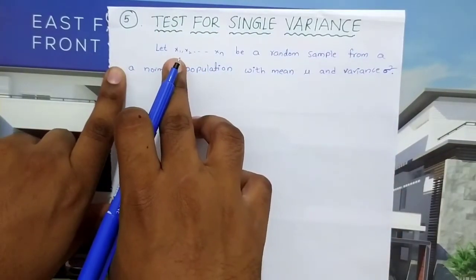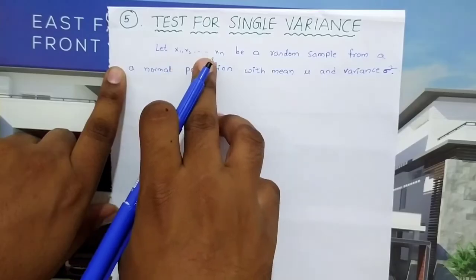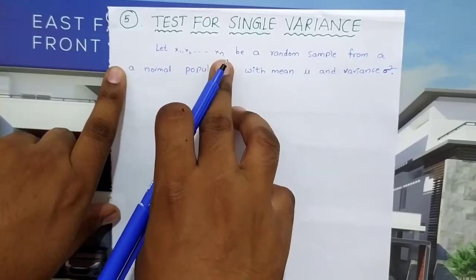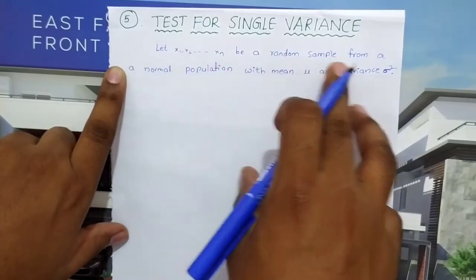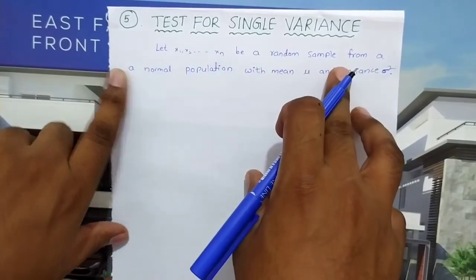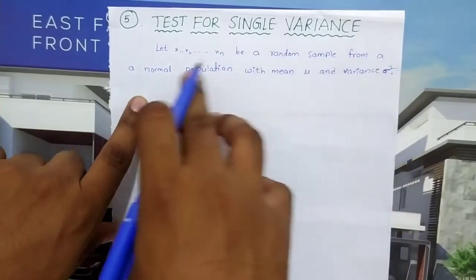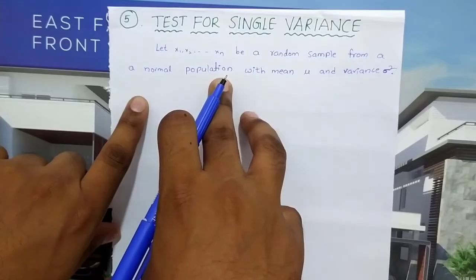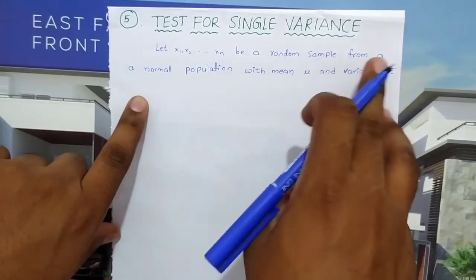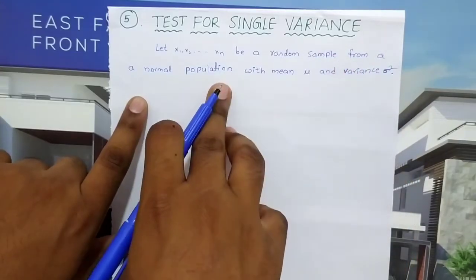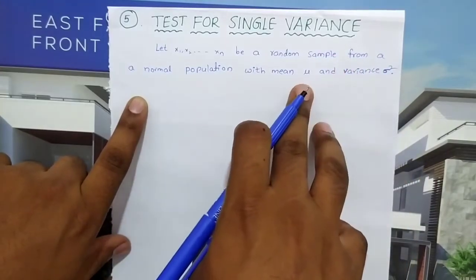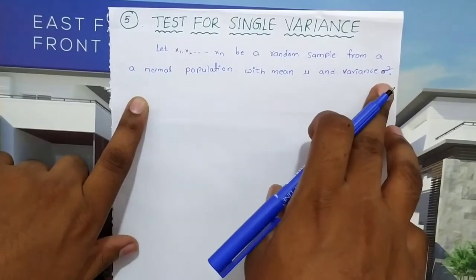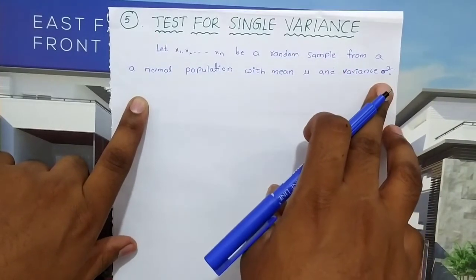Let x₁, x₂, up to xₙ be a random sample drawn from a normal population with mean μ and variance σ².